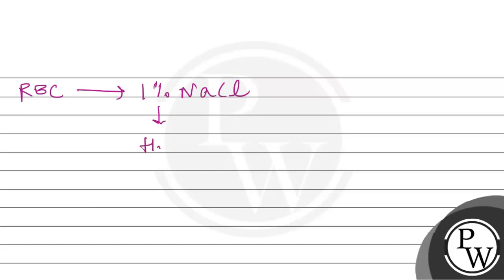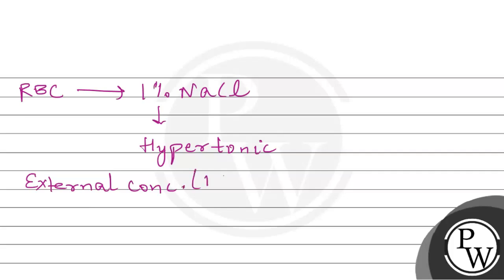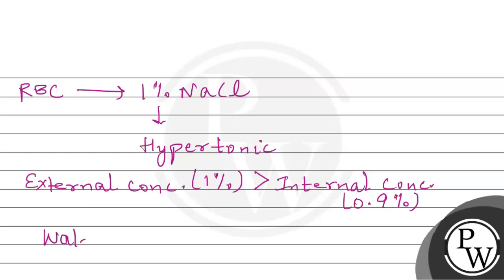अब जब RBC place किये जाएंगे 1% NaCl solution में, तो यह solution hypertonic बन जाएगा। इसमें जो external concentration है — यानिके 1% — वो high हो जाएगी than the internal concentration. यानिके internal concentration जो है, वो 0.9% है RBC की। इससे एक hypertonic environment बन जाएगा।